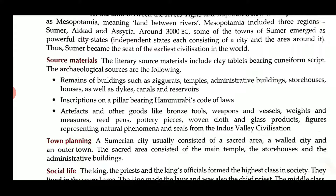What material did we get? We will study the source material. The literary source material includes clay tablets bearing cuneiform scripts. The archaeological sources are the following: remains of buildings such as ziggurats, temples, administrative buildings, storehouses, as well as dikes, canals and reservoirs.